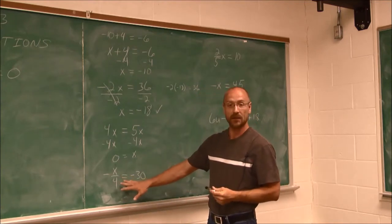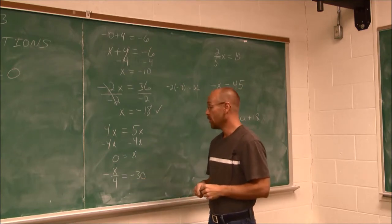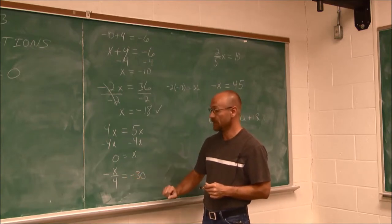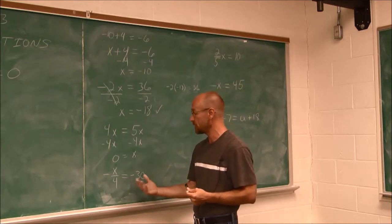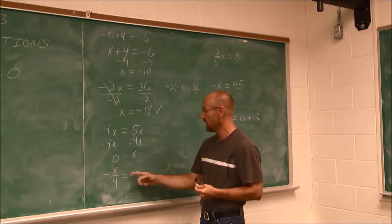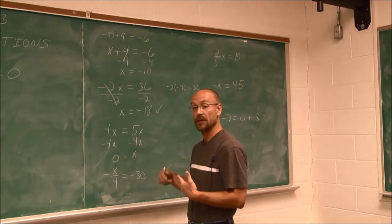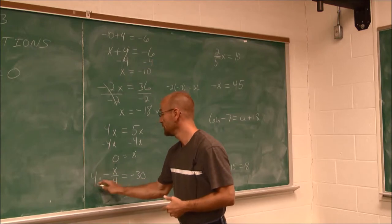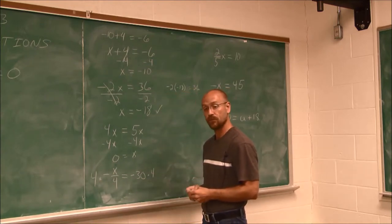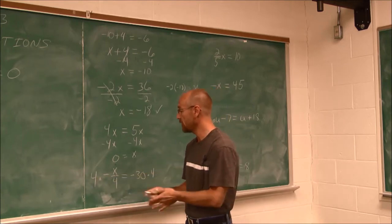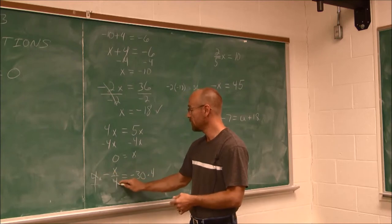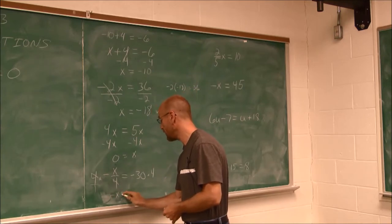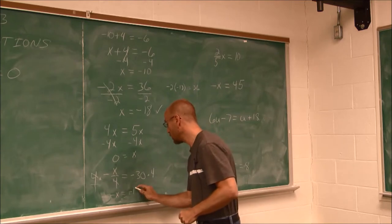What if we have a fraction, or think of it as division? We have negative x over 4 equals negative 30. There is no addition or subtraction. Thinking of this as division, I can undo it with multiplication. I multiply by 4 on both sides — 4 over 1 times x over 4 cancels the 4, giving negative x. And negative 30 times 4 is negative 120.